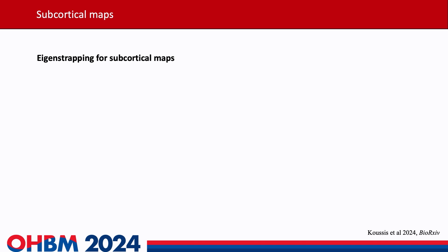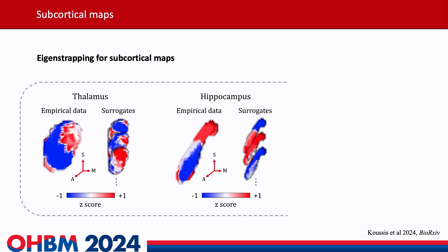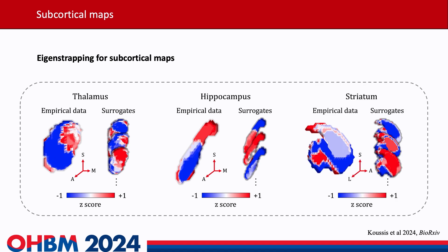Because the LBO — the Laplace-Beltrami operator — eigenmodes can be solved on more than just the cortex, we tried it in subcortical maps. That's the beauty of this method: it can be used on any surface, and we have an inference method for spatial maps located anywhere in the brain. We tested three very different subcortical structures: the thalamus, the hippocampus, and the striatum.